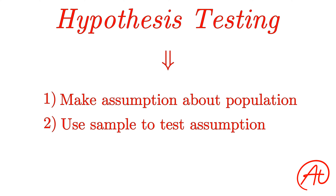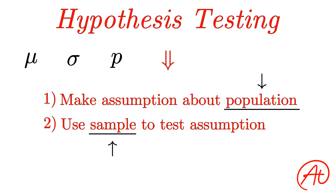Ultimately, in hypothesis testing, the goal is to figure out something about the overall population. We do that by first making some assumption about the thing we want to know about the population, whether it's mean or standard deviation or proportion or whatever it is. And since we usually can't gather information for everything in a population, we use a sample and all the cool things we learn in statistics to test whether that original assumption is plausible.